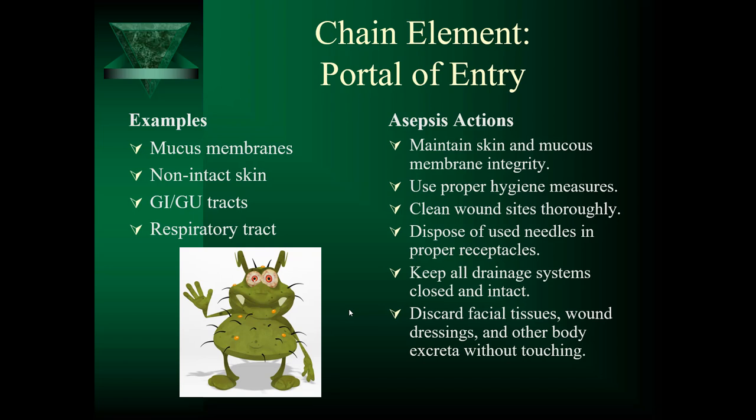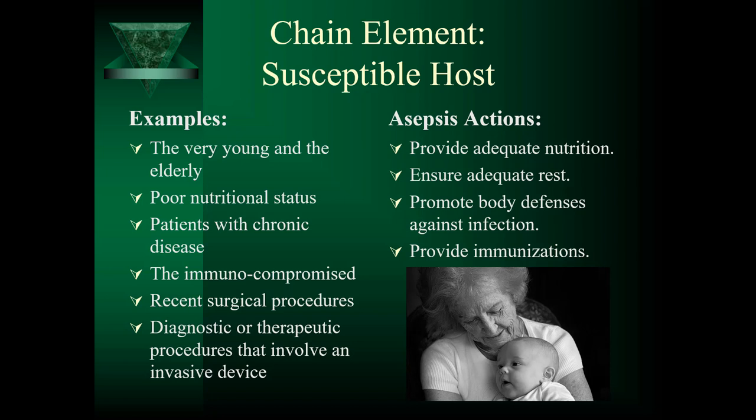The portal of entry is frequently the same as the portal of exit. For example, airborne pathogens from one person's sneeze will enter the nose and respiratory tract of a new host. Restaurant workers who don't wash their hands after using the restroom can contaminate food that is then consumed through the GI tract. The final element in the chain of infection is the susceptible host — someone at risk for infection. Whether exposure to the pathogen results in infection depends on several factors related to the person exposed, the type of pathogen, and the environment.